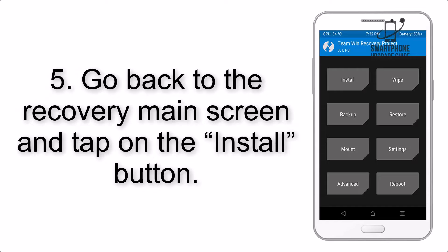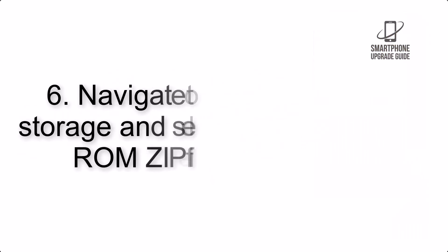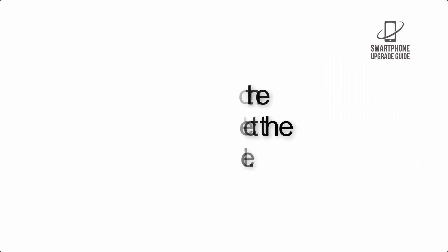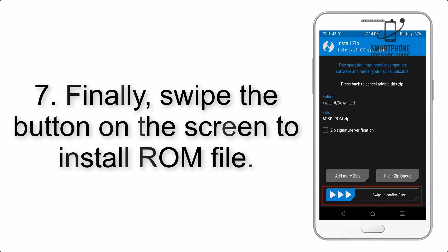Step 4: Swipe the button to wipe the device. Step 5: Go back to the recovery main screen and tap on the Install button. Step 6: Navigate to the storage and select the ROM zip file.